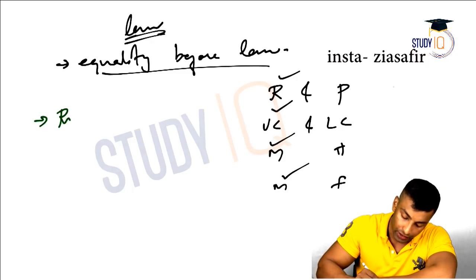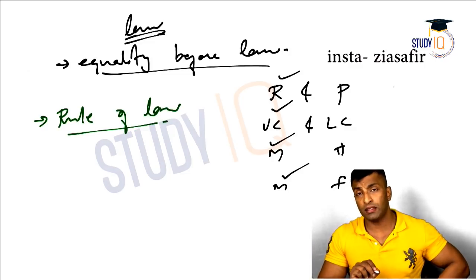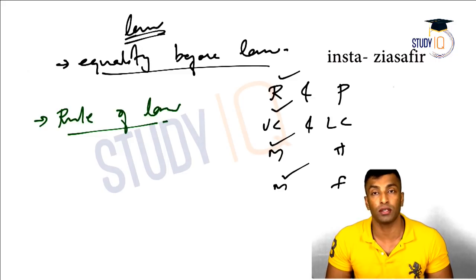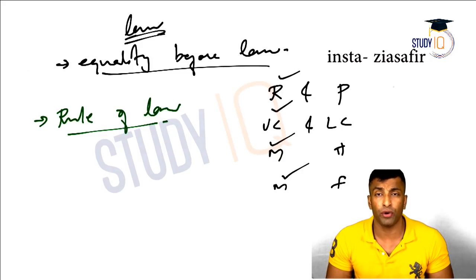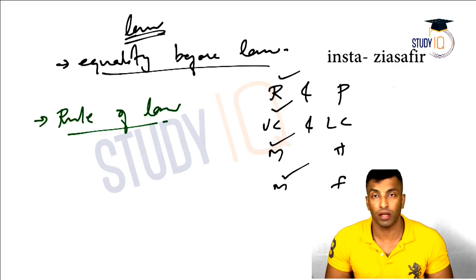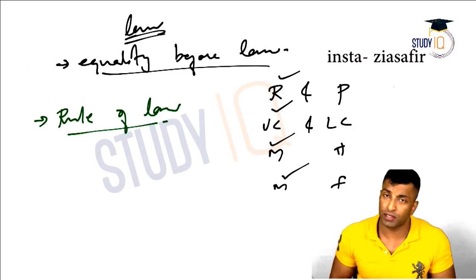The second important contribution is the rule of law — that everybody, including the Governor General, must work within the law. Nobody is above the law; there is a procedure and everyone must follow it completely. These two concepts — equality before law and rule of law — are very important contributions of the British that cannot be missed.